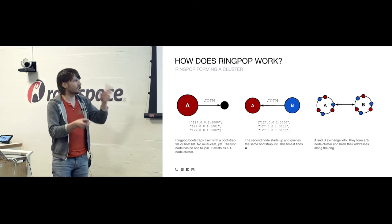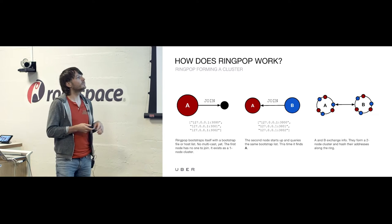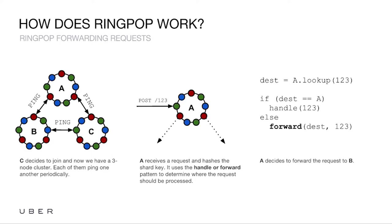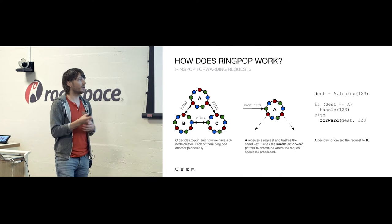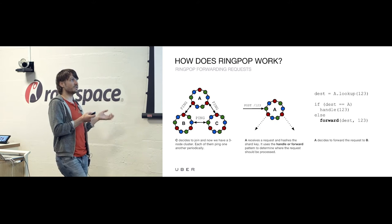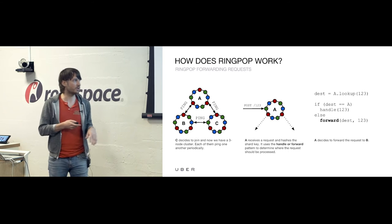Once A and B are positioned along the ring, they start exchanging info and form a two-node cluster, pinging each other. When C comes along, all addresses and replica points are evenly distributed around the ring, and A, B, and C are pinging one another. If a request arrives for entity with ID 123, we employ the handler-forward pattern: ringpop.lookup() — give it the sharding key, get a destination back. If the destination resolves to A, A handles the request; otherwise it forwards it over T-channel.